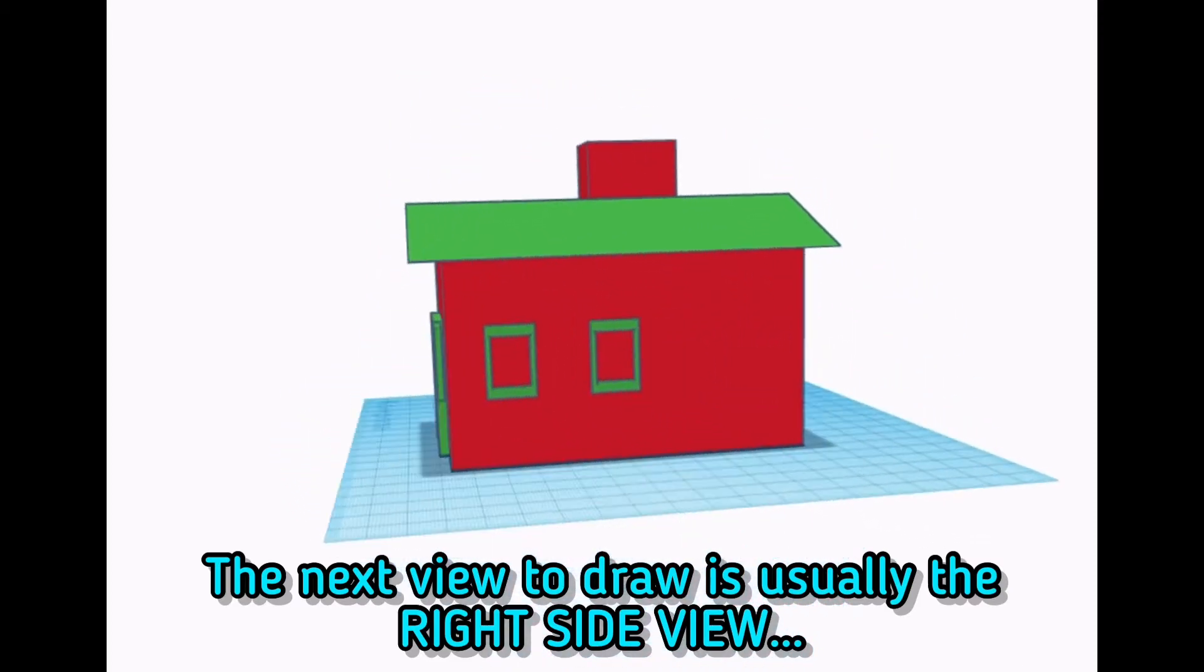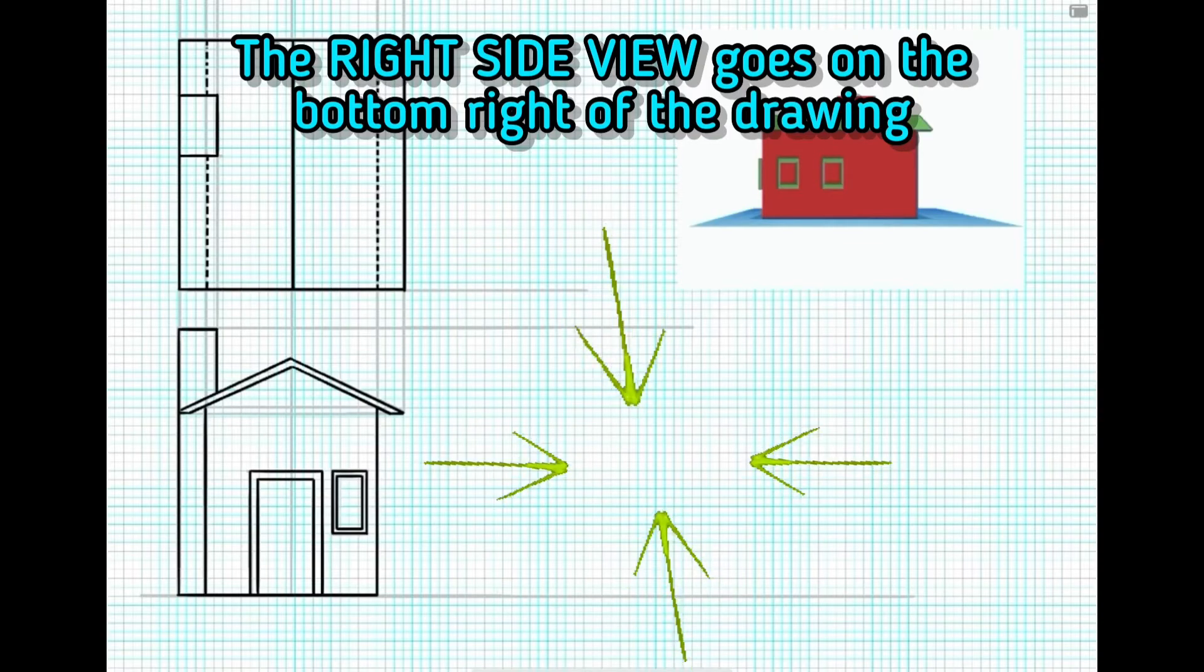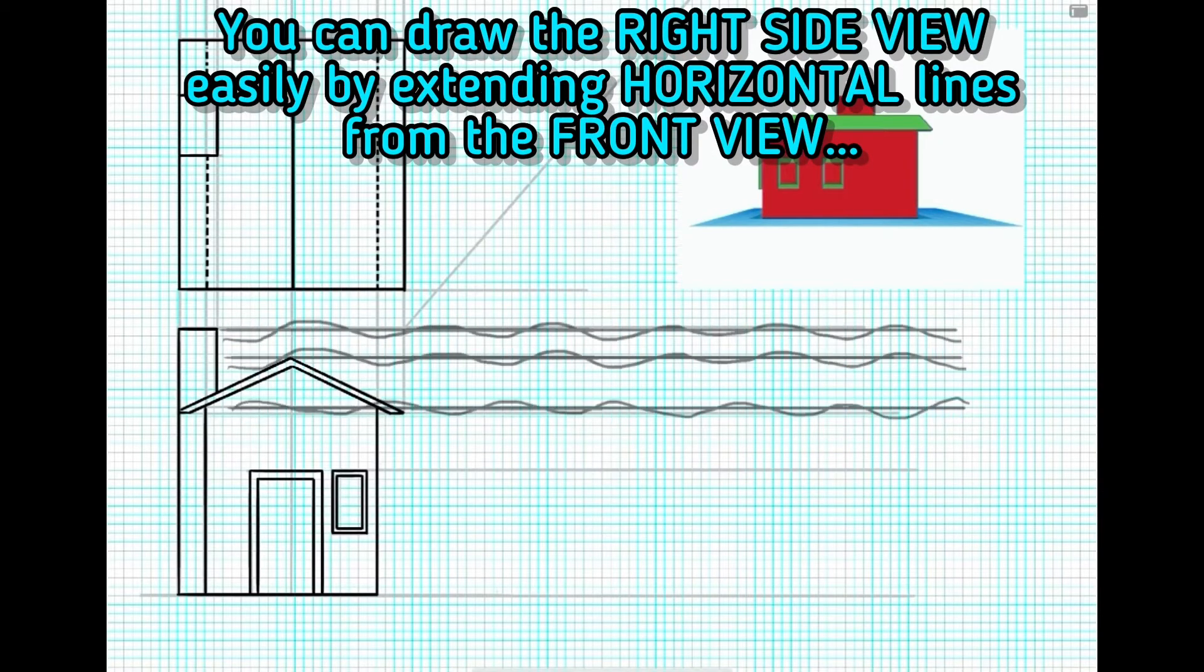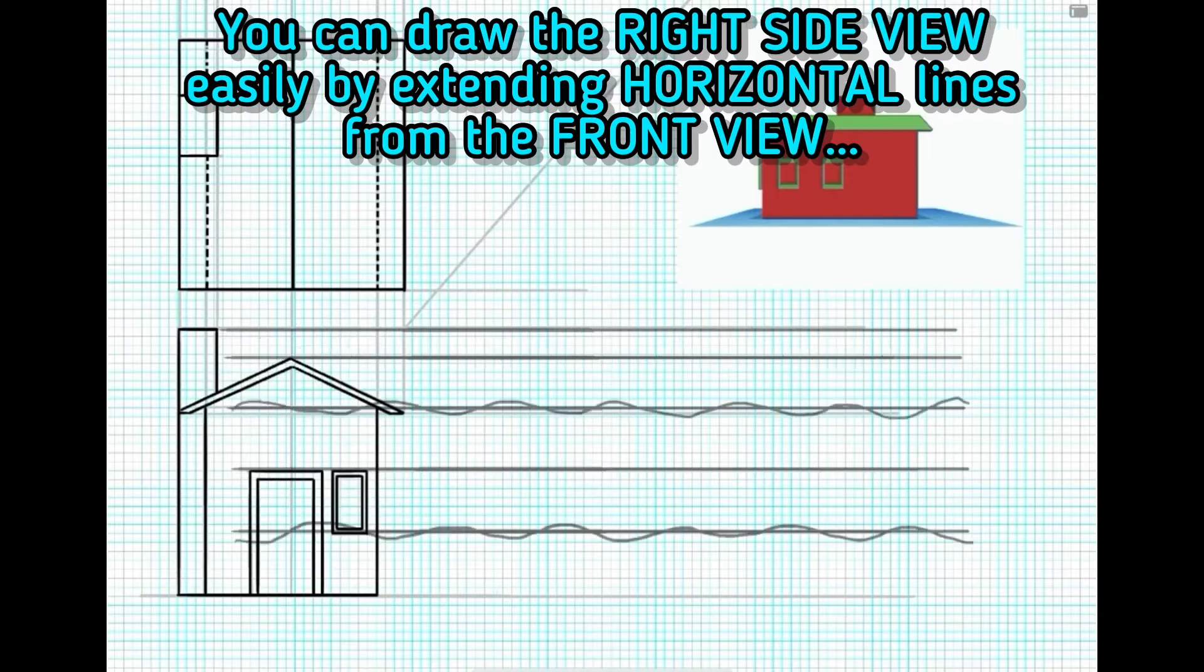The next view to draw is usually the right side view. The right side view goes on the bottom right of the drawing. You can draw the right side view easily by extending horizontal lines from the front view.